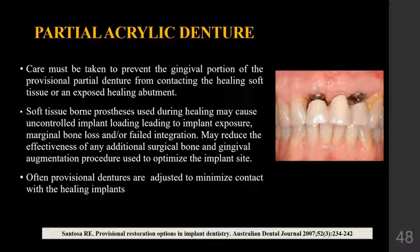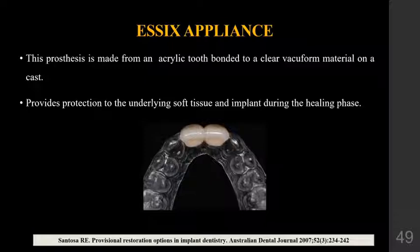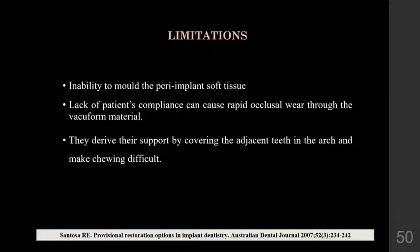An SX appliance can be used as an alternative to partial acrylic dentures in cases with limited inter-occlusal space or deep anterior overbite. It is made from an acrylic tooth bonded to a clear vacuum-form material on a cast. It provides protection to the underlying soft tissue and implant during the healing phase. Limitations include the inability to mold peri-implant soft tissue, reliance on adjacent teeth for support which makes chewing difficult, and lack of patient compliance causing rapid occlusal wear through the vacuum-form material.